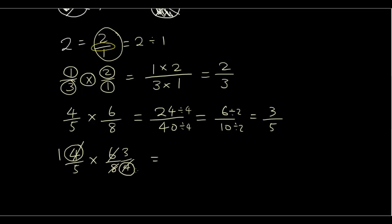4 divided by 4 is 1, 4 divided by 4 is 1. So we're left with some very simple numbers to multiply. 1 times 3 is 3, 5 times 1 is 5. So you have saved yourself a lot of multiplying and dividing big numbers.